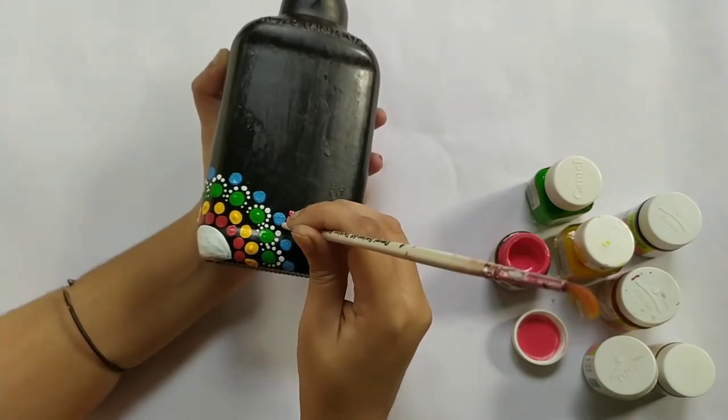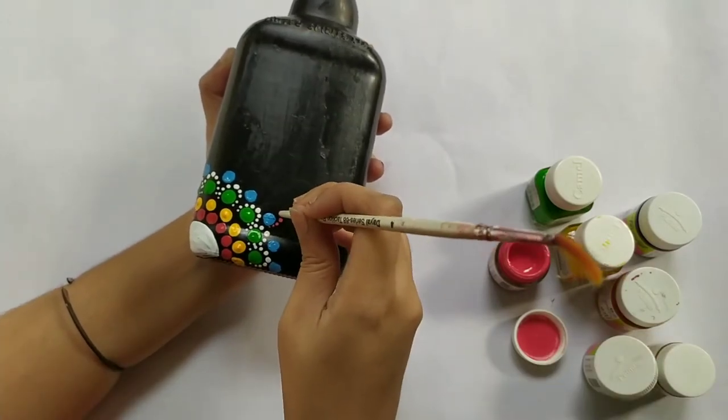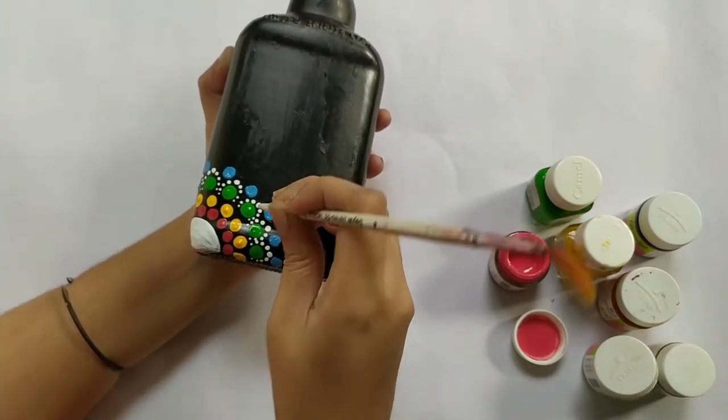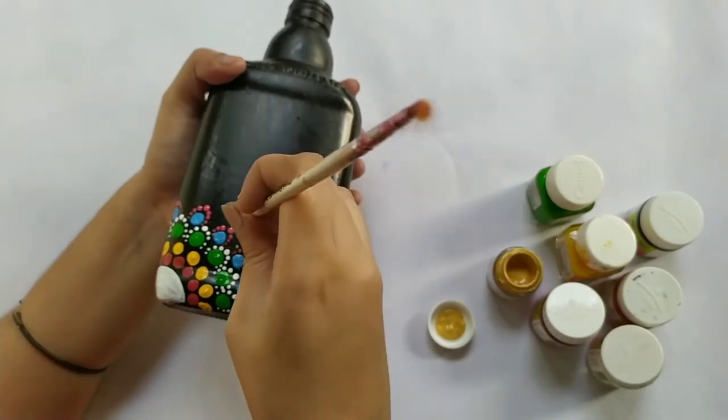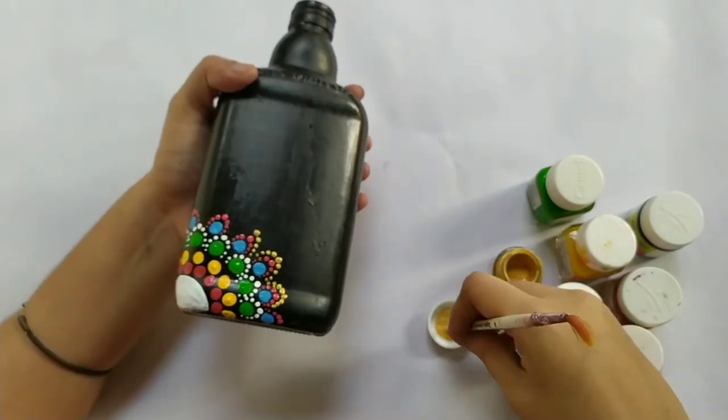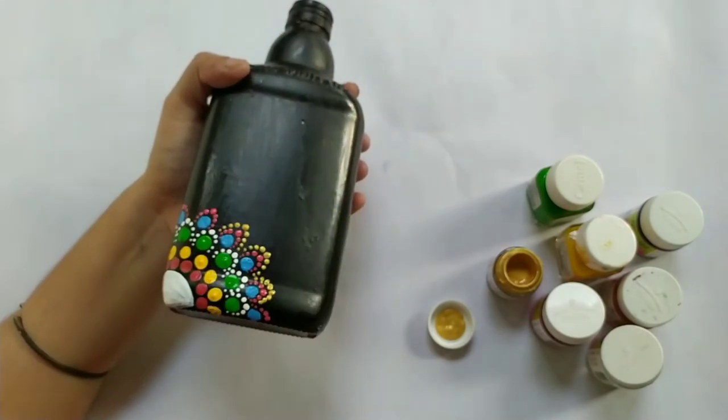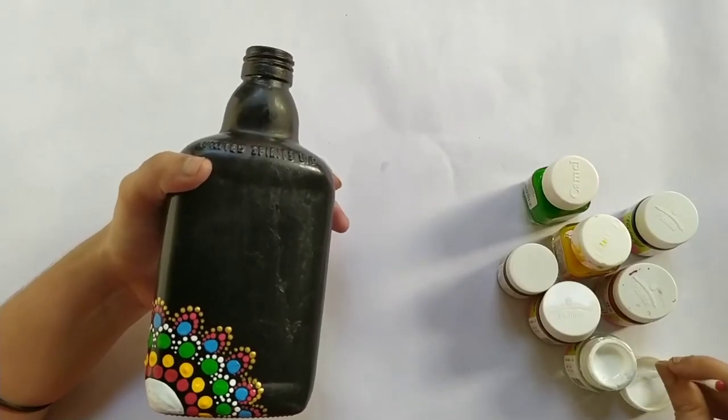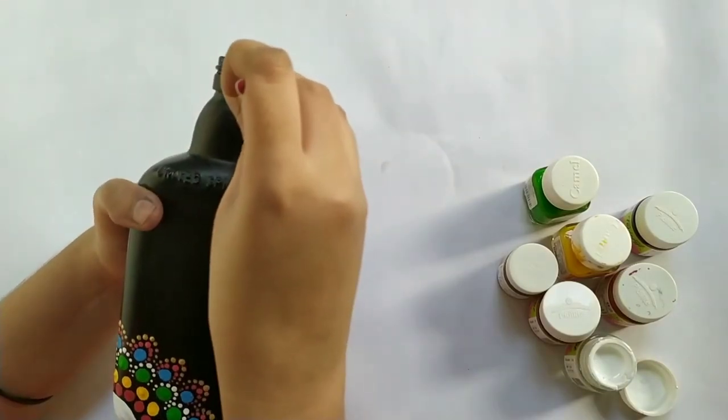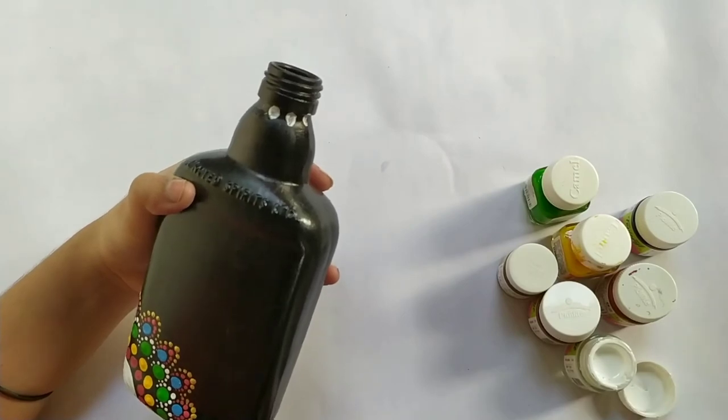Now I am making almost a similar design with red and with golden color. I have left this part for drying and making some designs in the neck.